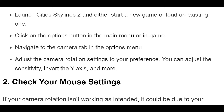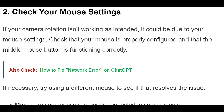Launch Cities Skylines 2 and either start a new game or load an existing one. Click on the options button in the main menu or in-game, then navigate to the camera tab in the options menu. Adjust the camera rotation settings to your preference — you can adjust the sensitivity, invert the y-axis, and more.